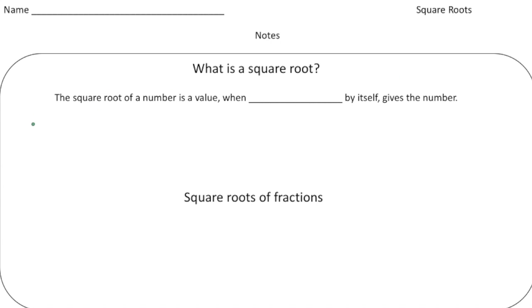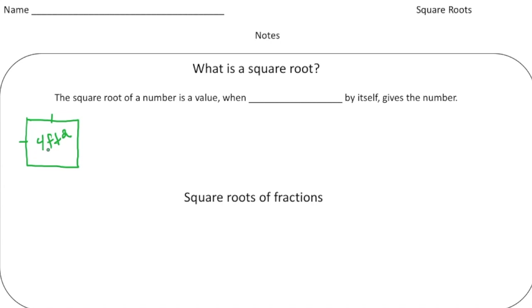Let me show you. Draw a square — remember the length and width of a square have to be the same. Let's say the area of the square is four square feet. My question for you is: what does the length and width have to be? The length and width of a square has to be the same number, so what number times itself will give four?